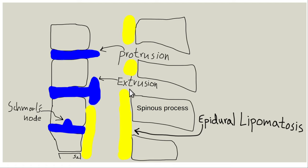The disc can also herniate into the vertebral body itself — if there's a soft end plate from osteoporosis, for example — and when that happens it's called a Schmorl's node. These are thought to be painful initially but often become asymptomatic. I actually think I had one of those when I was squatting heavy weights as a young guy — I had sudden back pain, took about three months off, and it all went away.